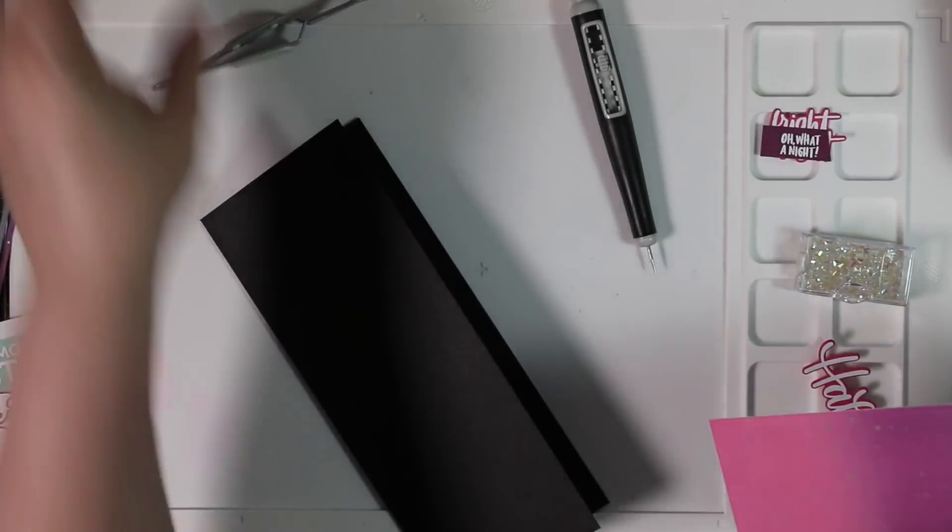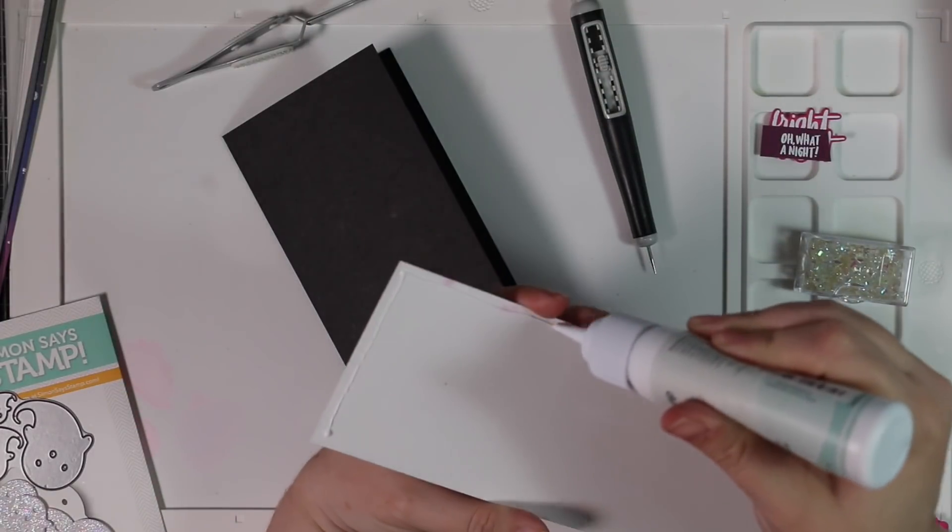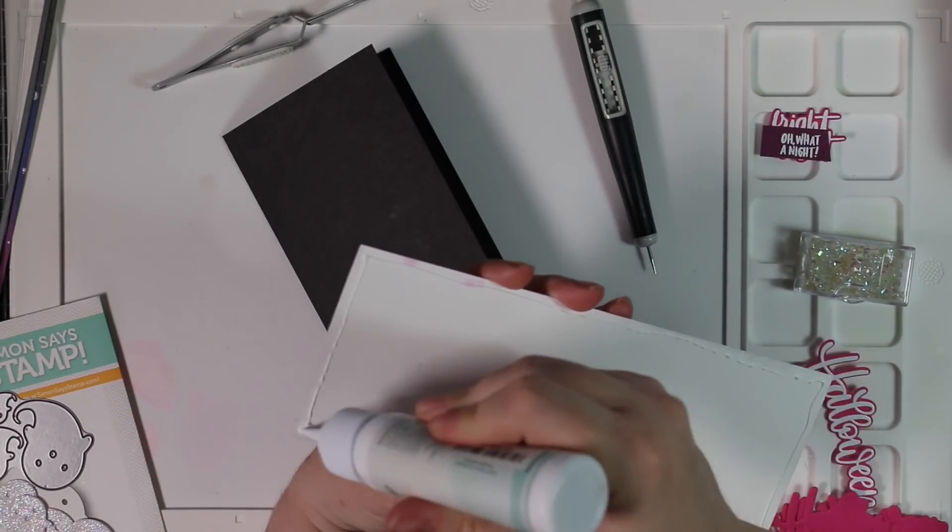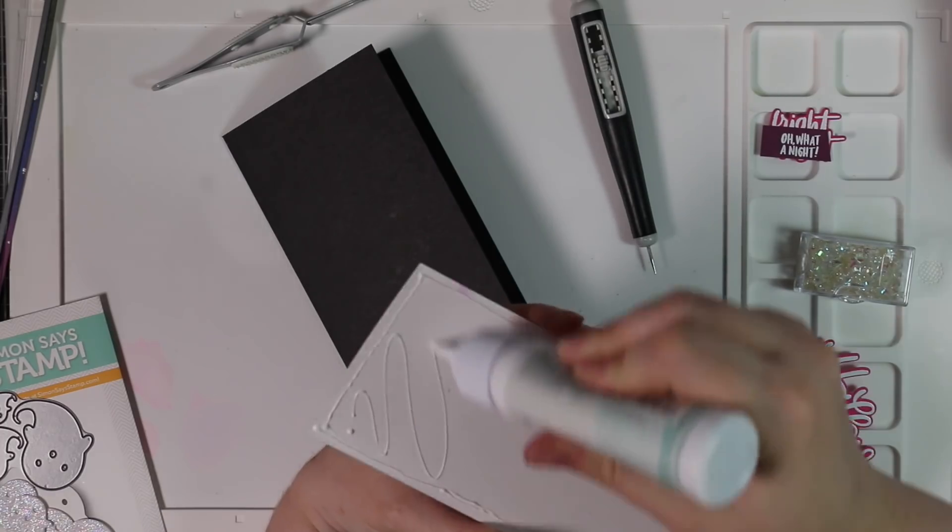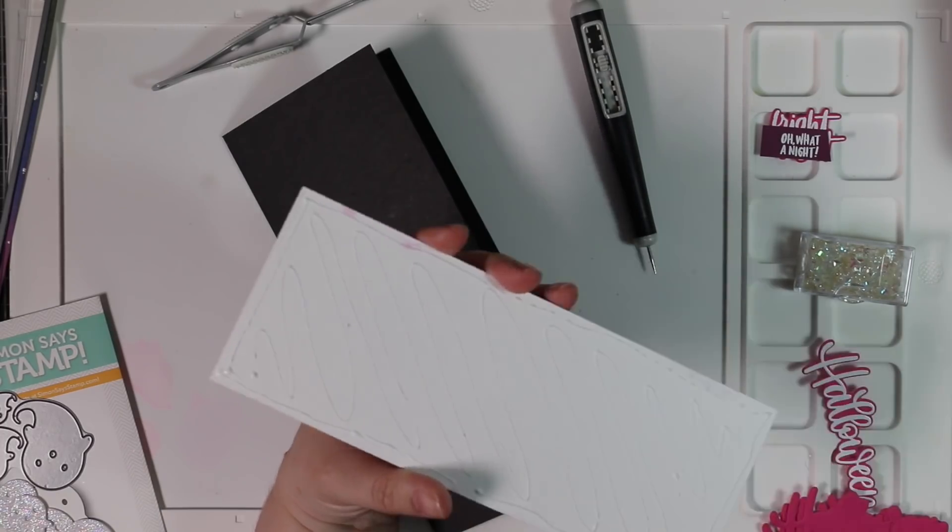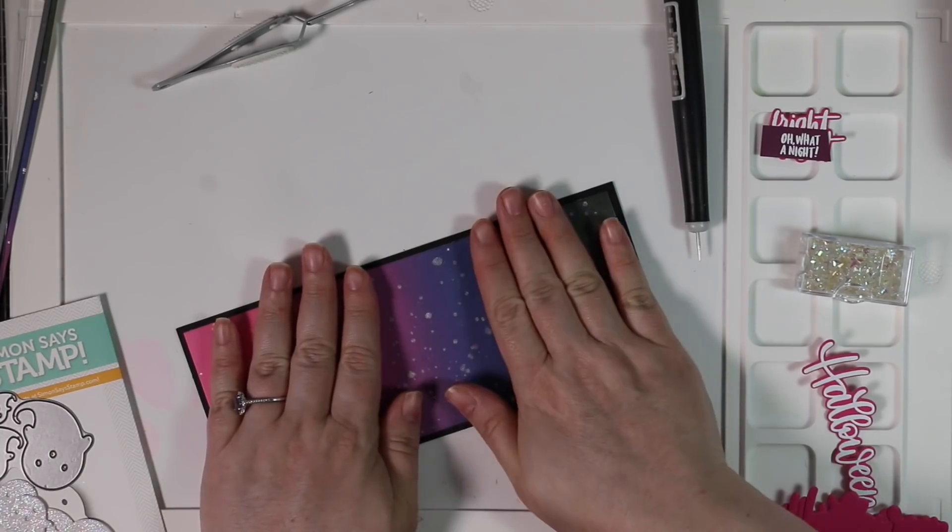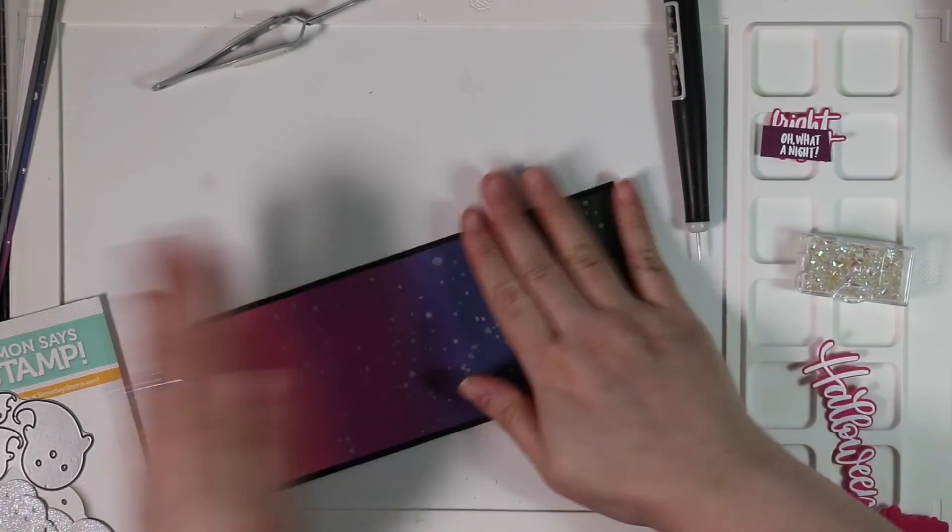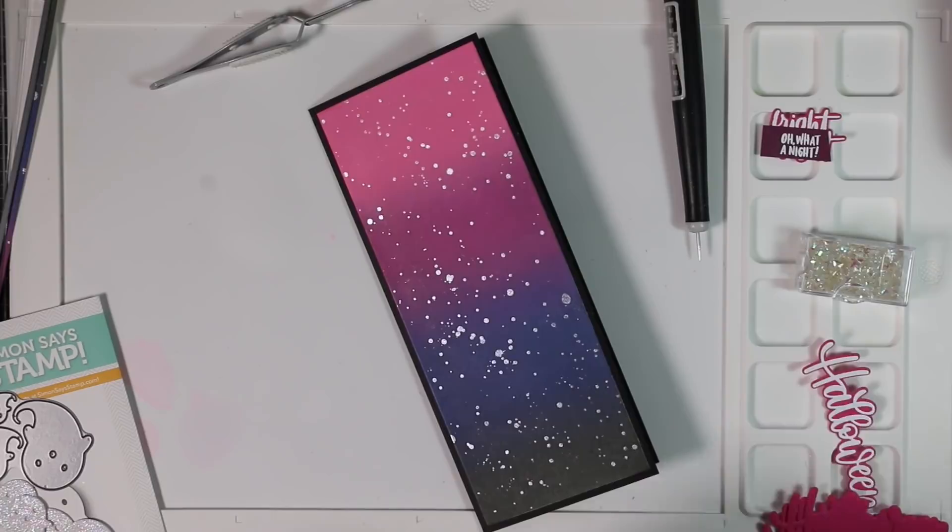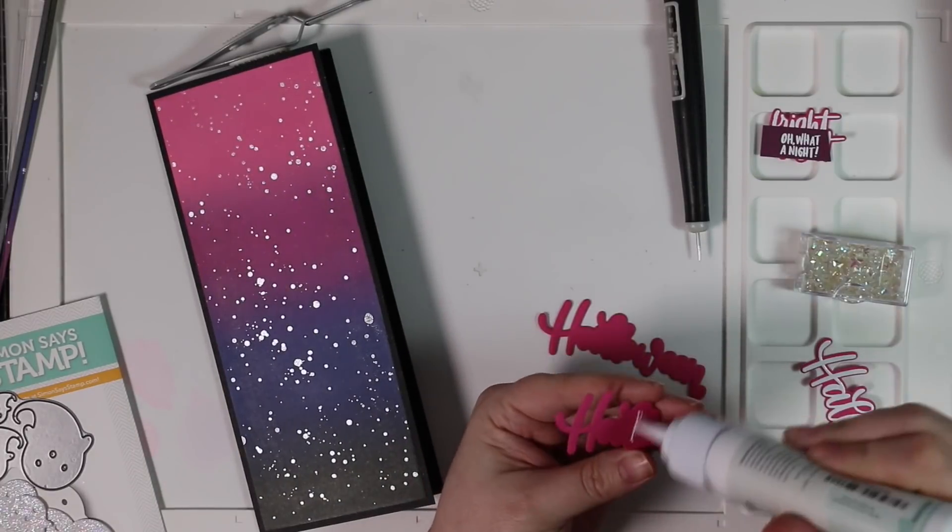And then I pulled out the friendly ghosts wafer die set, which I've used on at least one of my other Halloween videos this year. This is a set I've used many, many times over the years. And I die cut those friendly ghosts using some of Simon's white glitter paper. So I've got everything die cut. Now it's just time to start assembling everything.